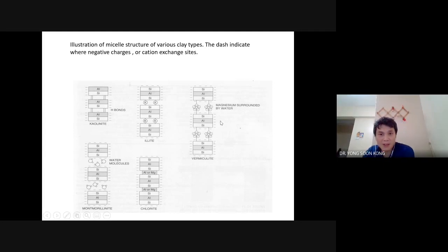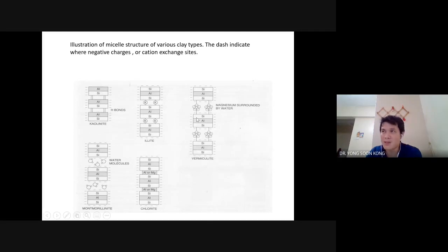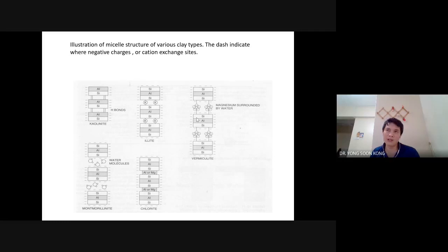There is also vermiculite. In this case, vermiculite has magnesium surrounded by water — and this one swells, because magnesium surrounded by water is very similar to the montmorillonite case. So the difference between these 2-1 clays is that some can swell and some cannot swell, and because of that, these clays have very different applications.